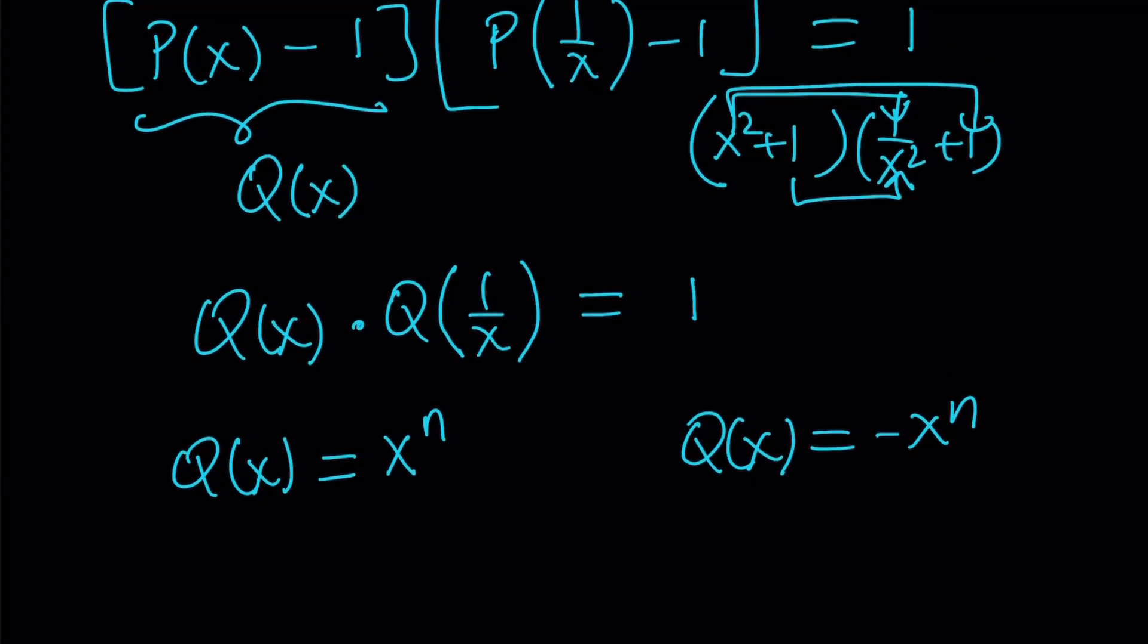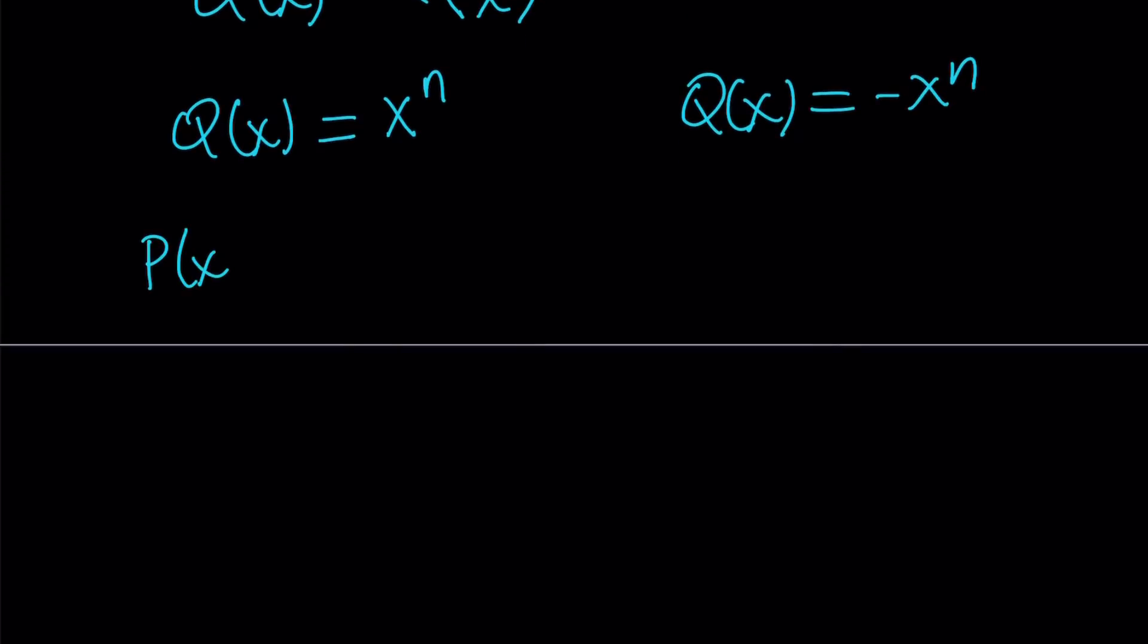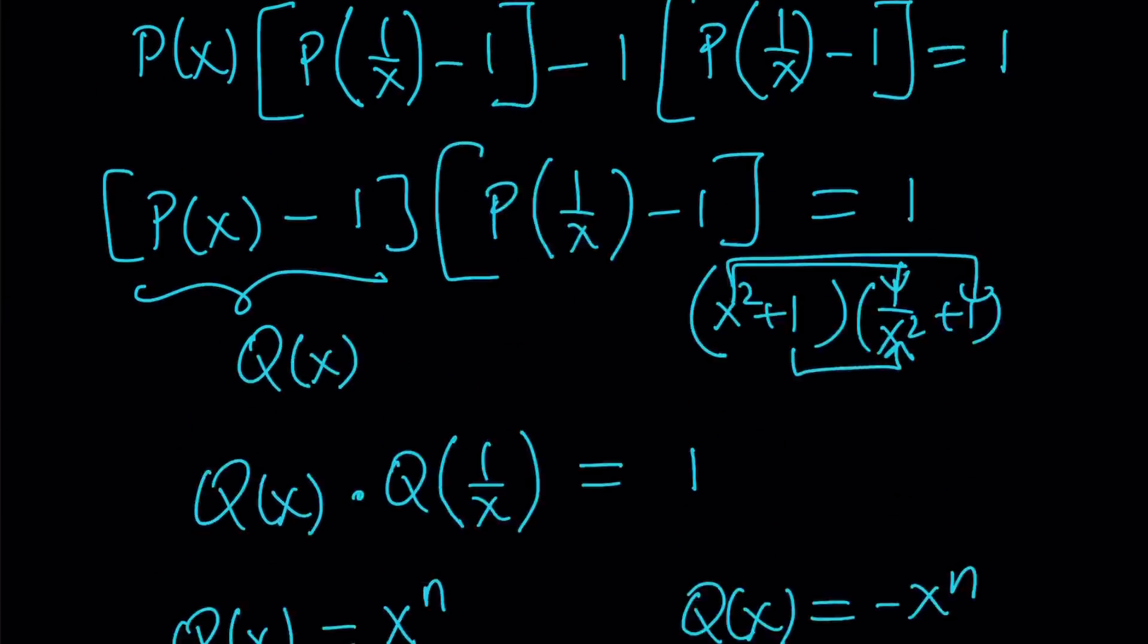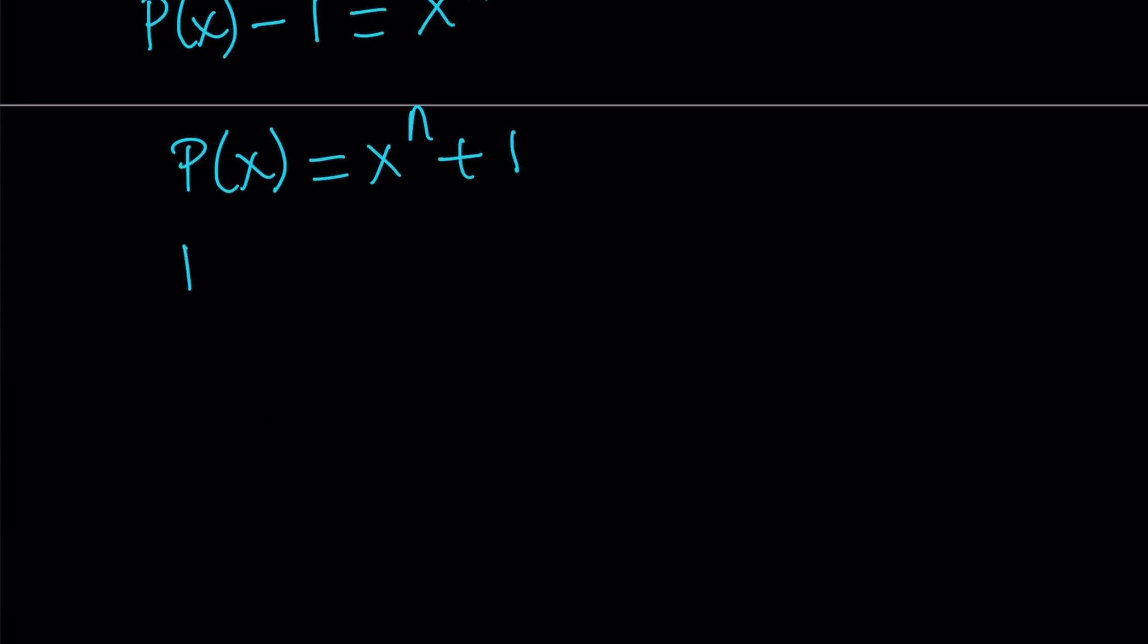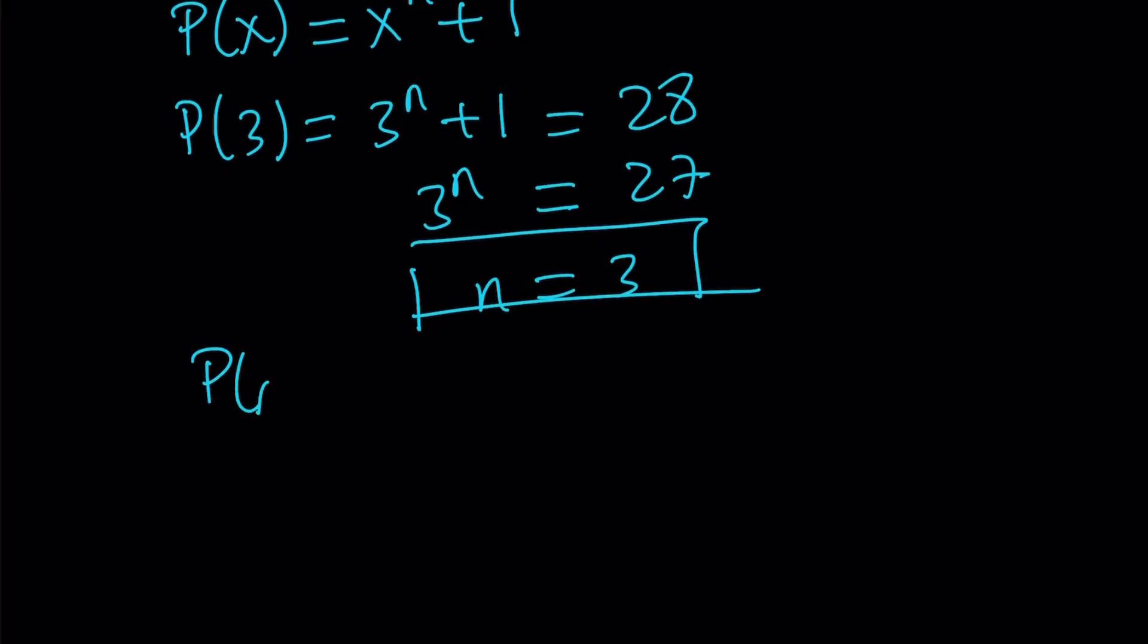We defined Q of X to be P of X minus 1. So now I can safely say that P of X minus 1 equals X to the power N, and from here P of X equals X to the power N plus 1. Now, with this one, I can go ahead and use the given initial condition. We were given that P of 3 is equal to 28. So we can go ahead and replace X with 3 on both sides, and that gives us 3 to the power N plus 1, and set it equal to 28. From here, we get 3 to the power N equals 27, and N equals 3, which means that our polynomial in this case, P of X, is going to be X cubed plus 1.